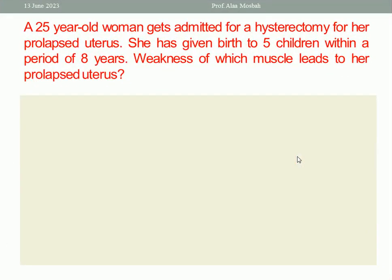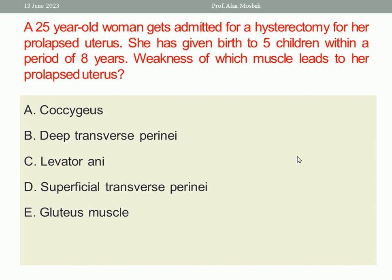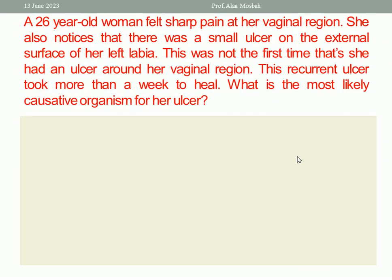Next: a 25-year-old woman is admitted for a hysterectomy for her prolapsed uterus. She had given birth to five children within a period of eight years. Weakness of which muscle leads to her prolapsed uterus? A. Sartorius. B. Deep transverse perineal. C. Levator ani. D. Superficial transverse perineal. E. Gluteus muscle. The one best response is C, Levator ani.